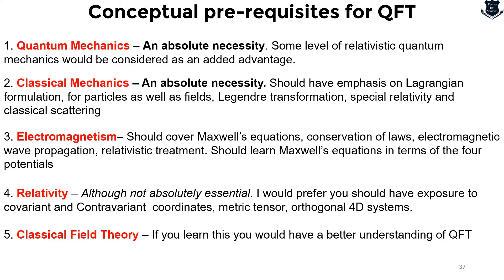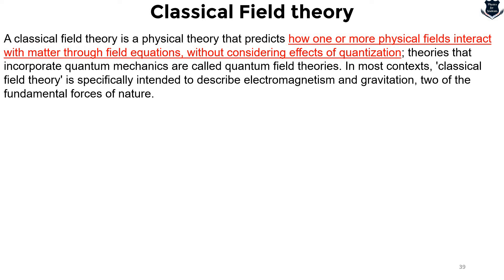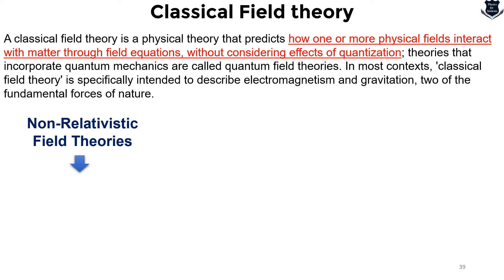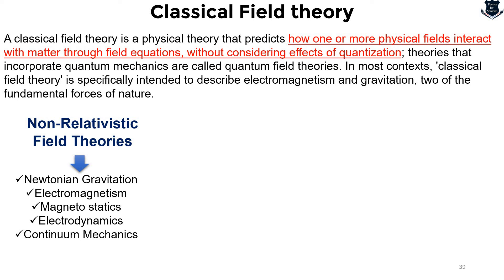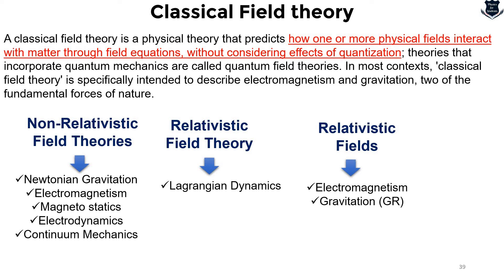Among the conceptual prerequisites, the first is classical field theory — a theory that predicts how one or more physical fields interact without considering quantization. The non-relativistic field theories include Newtonian electromagnetism, magnetostatics, electrodynamics, and continuum mechanics. Relativistic field theory includes Lagrangian dynamics, relativistic fields, electromagnetism, and a part of general gravitation. When there is a shift from particles to fields, classical field theory provides the conceptual framework for understanding how physical fields work.